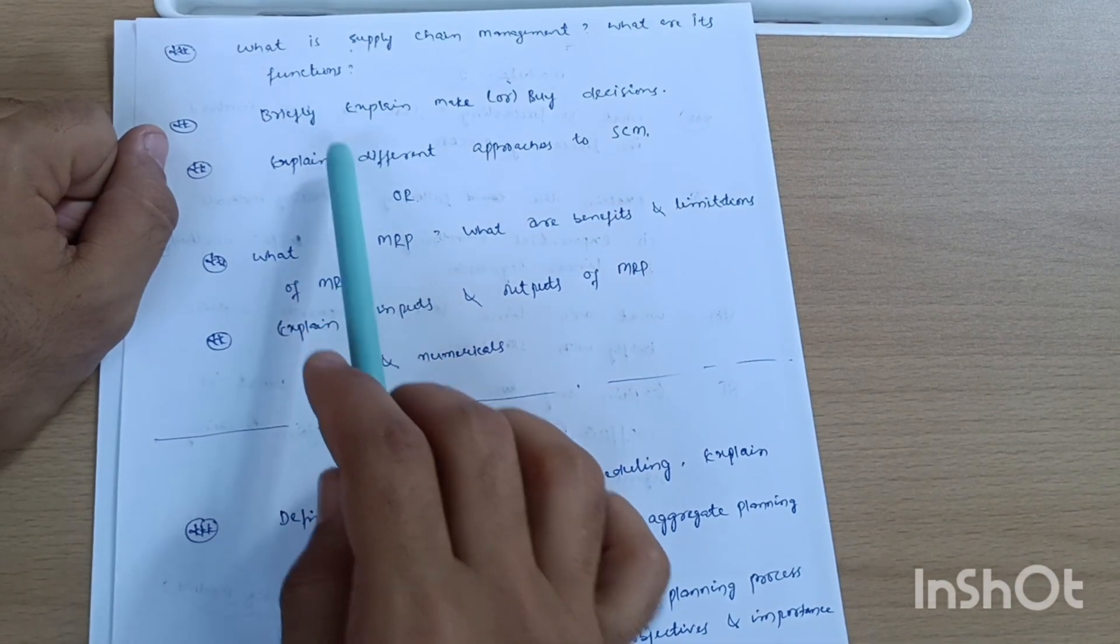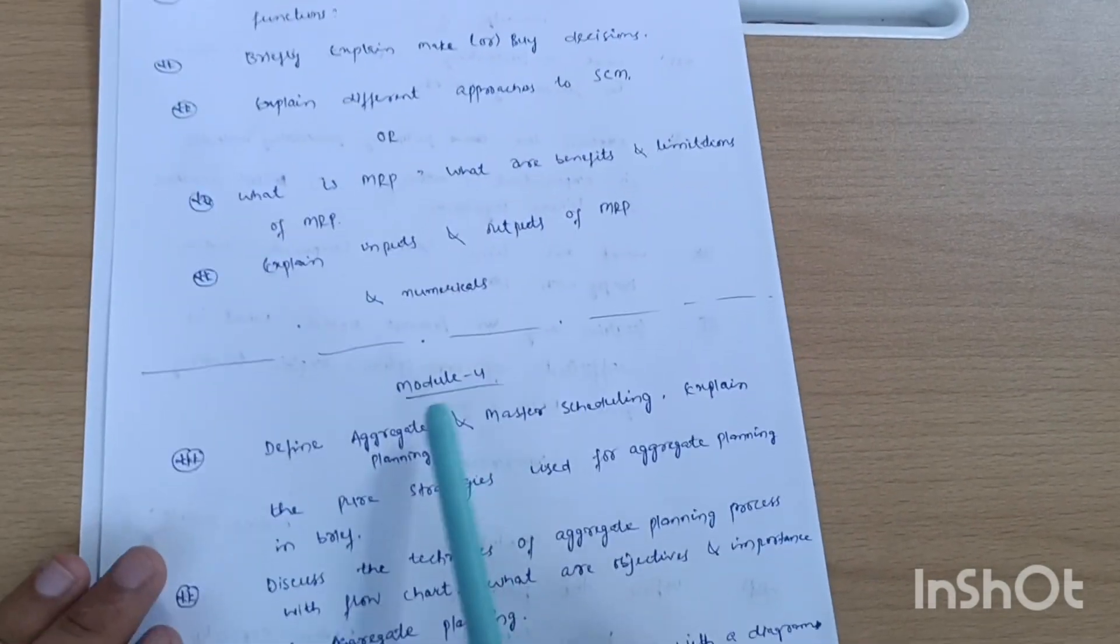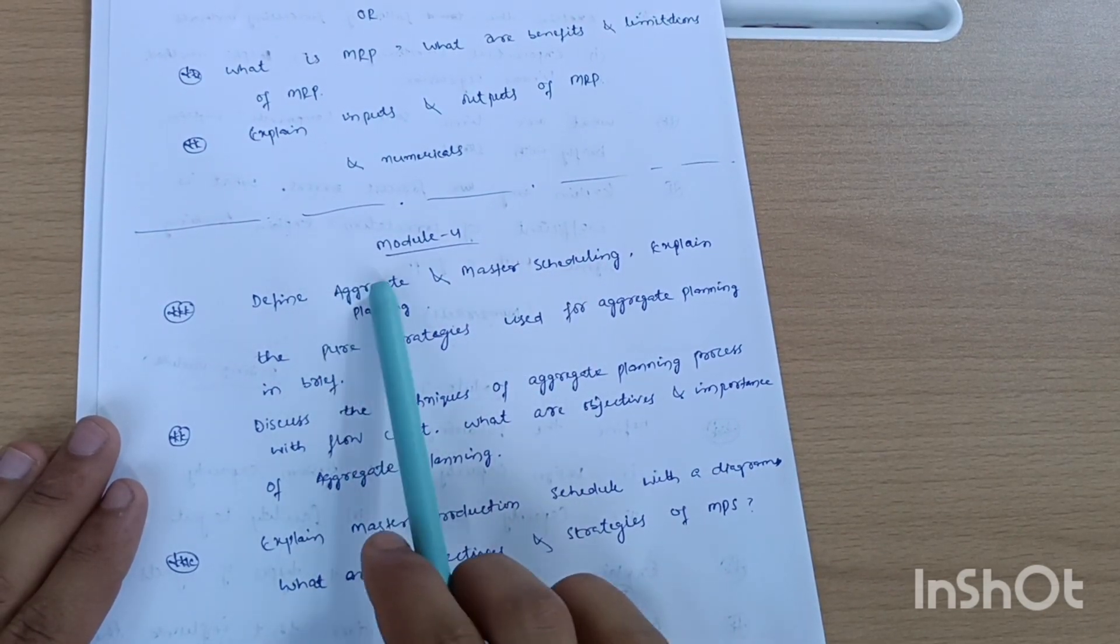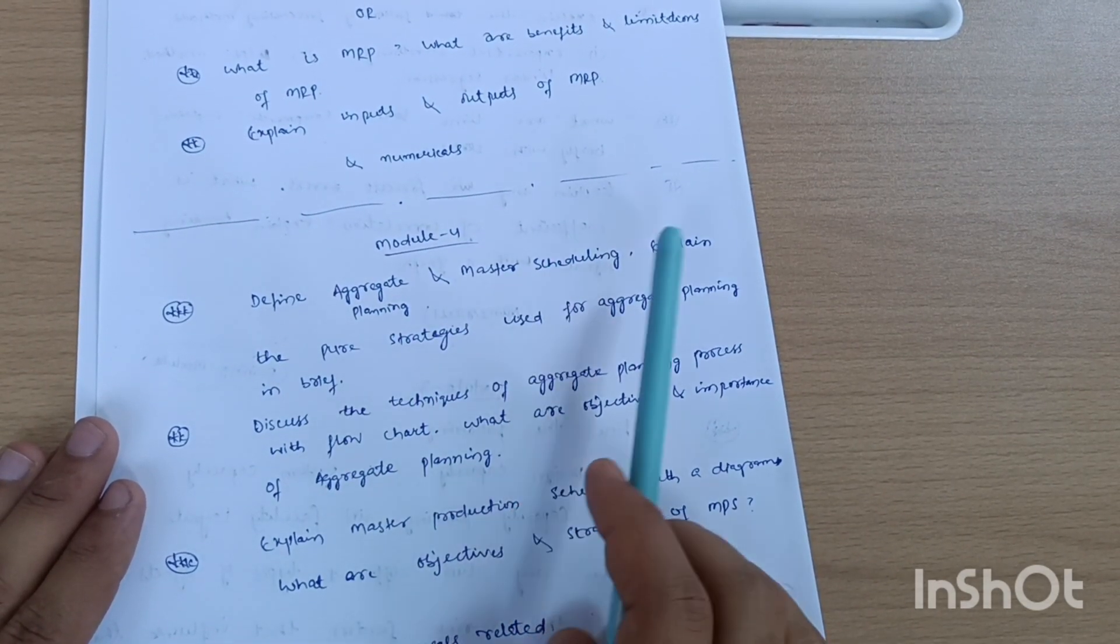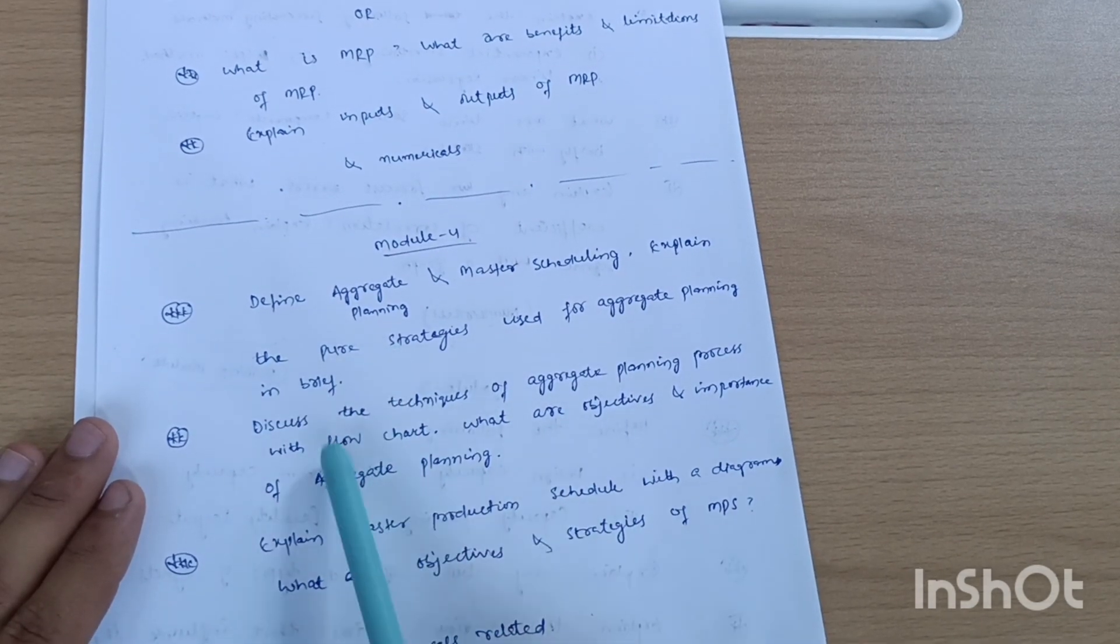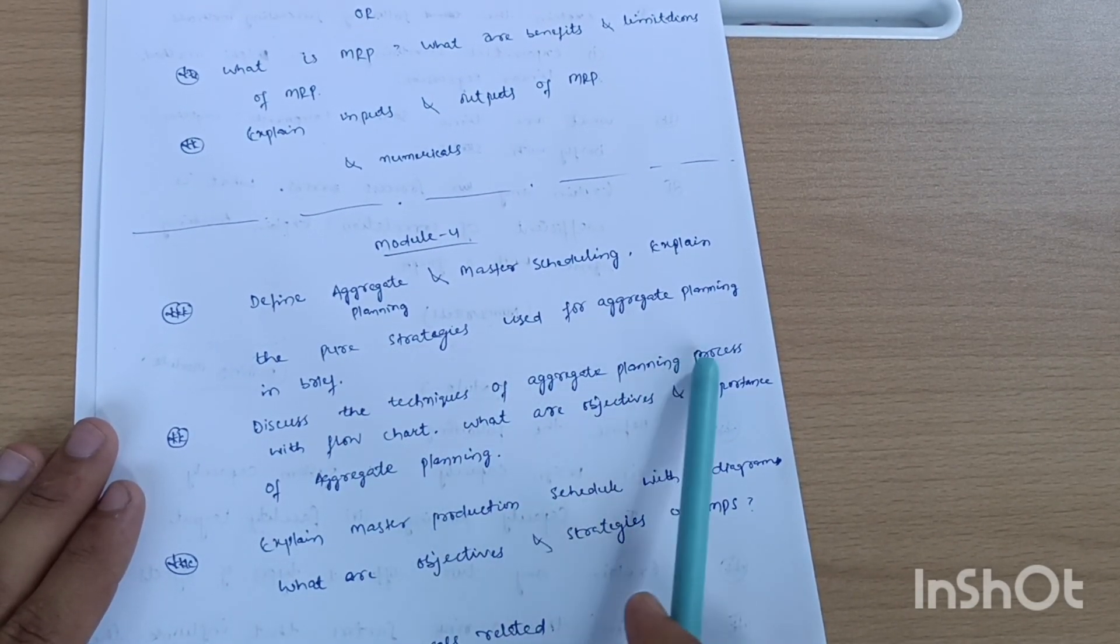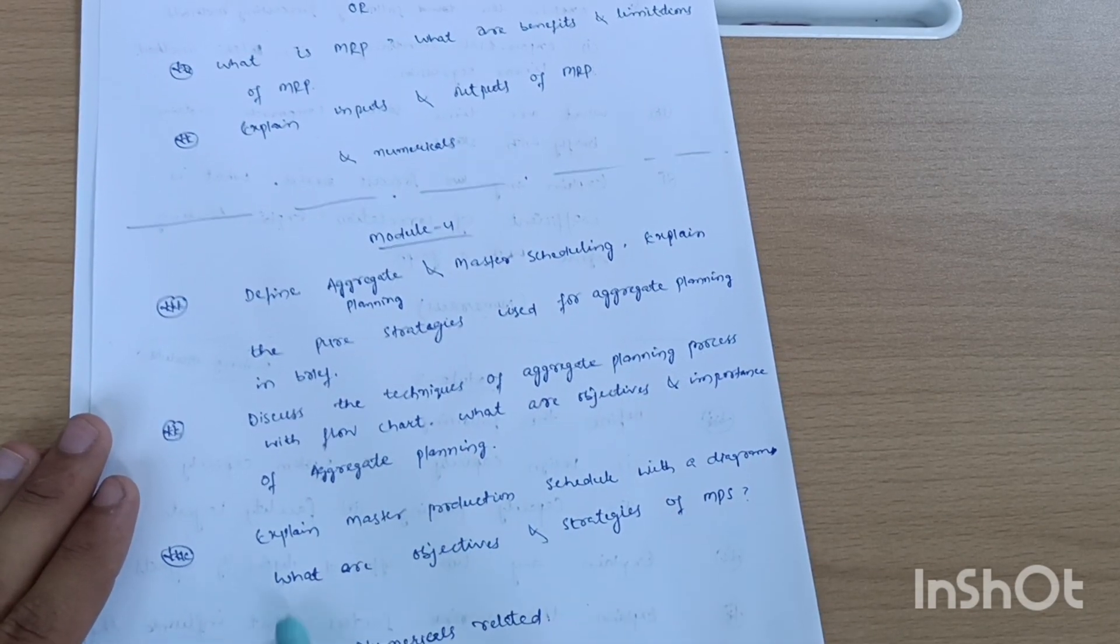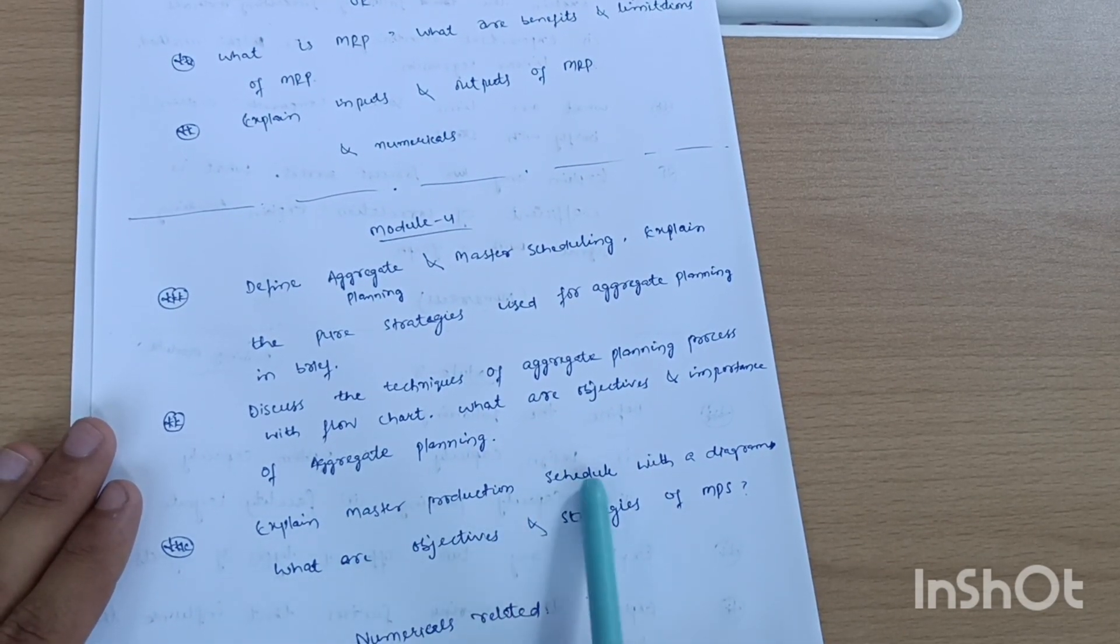Four questions only you have to cover so you can easily grab more marks from Module 5. Next is Module 4. Define aggregate planning and master scheduling. Excellent. The pure strategies used for aggregate planning. In brief discuss the techniques of aggregate planning process with flowchart. What are objectives and importance of aggregate planning?